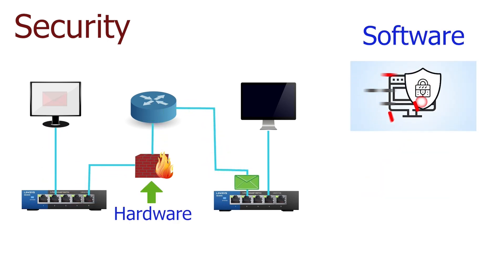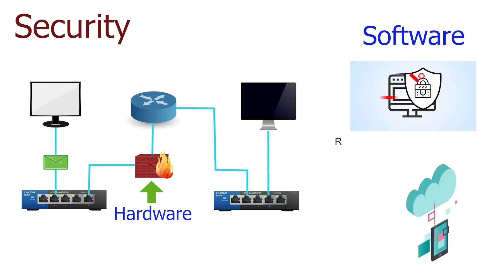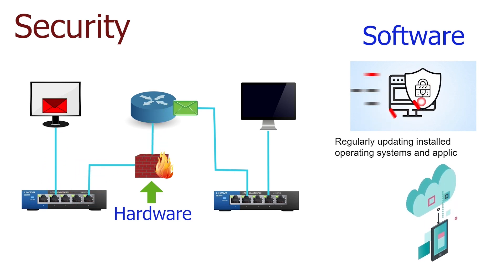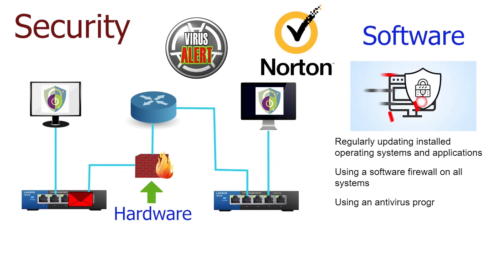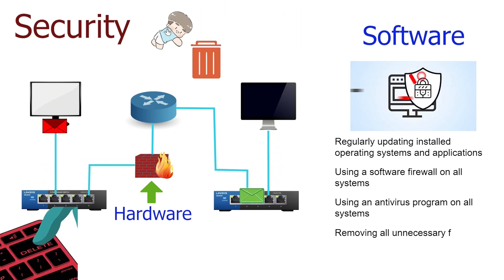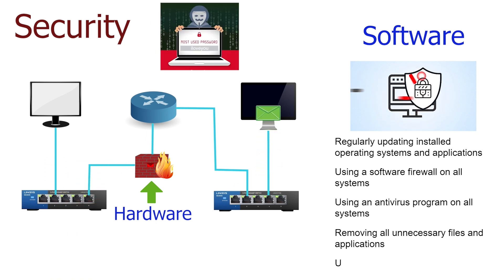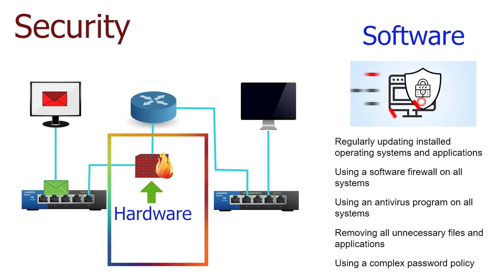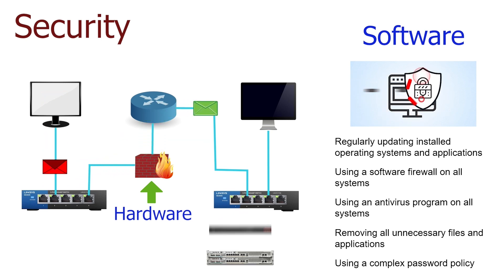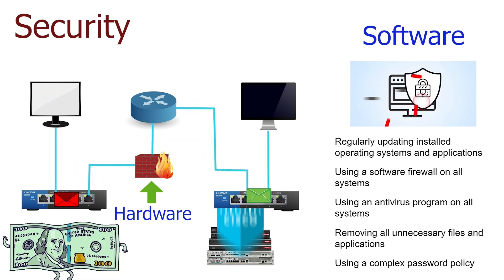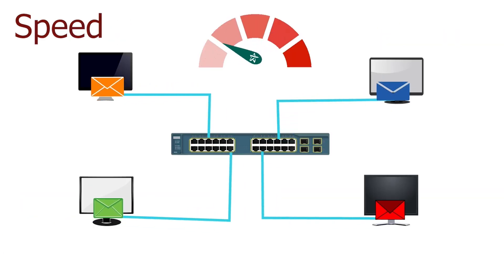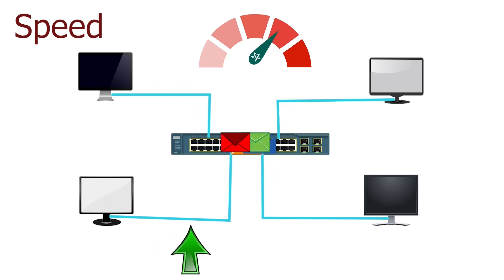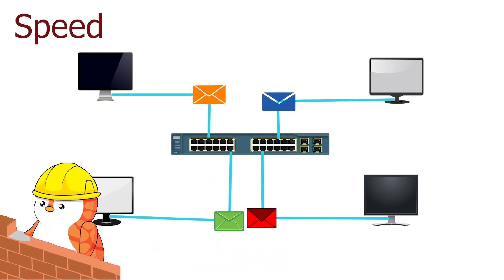The software security method includes steps you can take without adding a security component to the network. The most common methods are: regularly updating installed operating systems and applications, using a software firewall on all systems, using an antivirus program on all systems, removing unnecessary files and applications, and using a complex password policy. The hardware method adds security components to the network, and many security appliances are available in the market to choose based on requirements and budget. Speed describes how fast data transmits between network endpoints and depends on many factors such as cable type and length, the physical layout of the network, and networking devices.